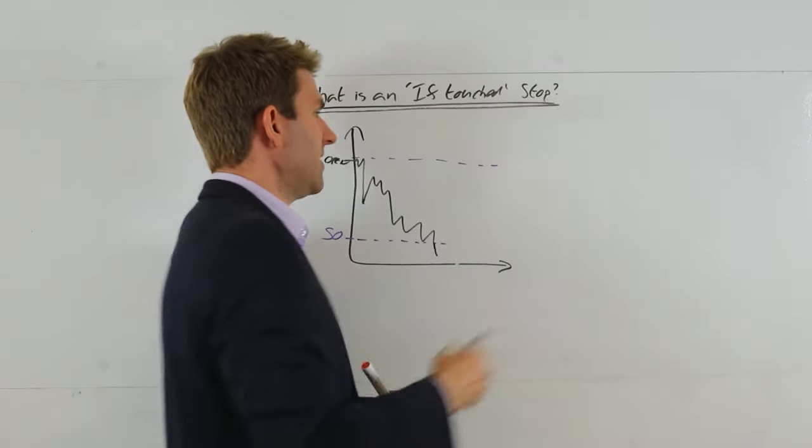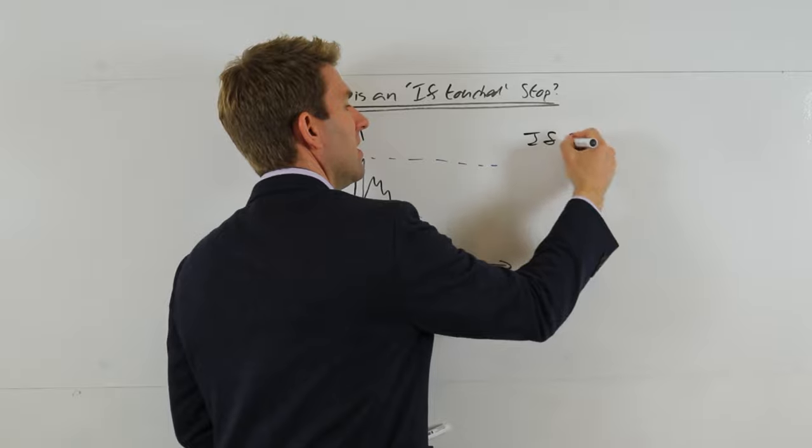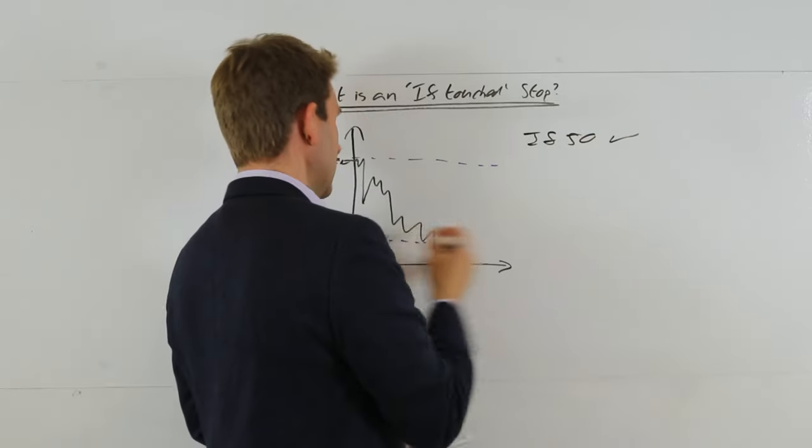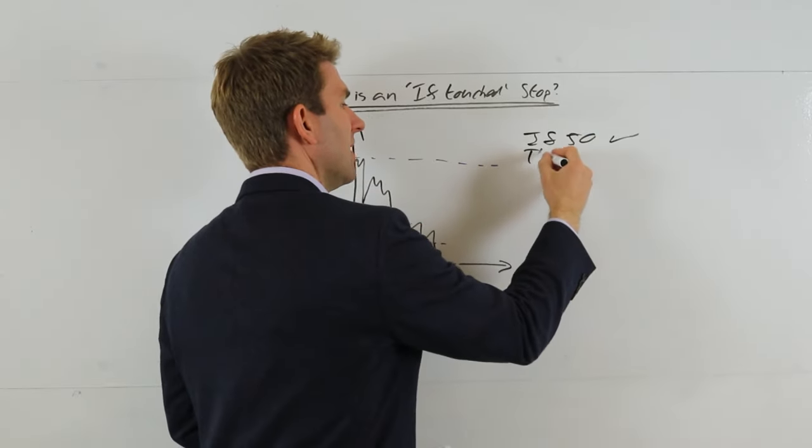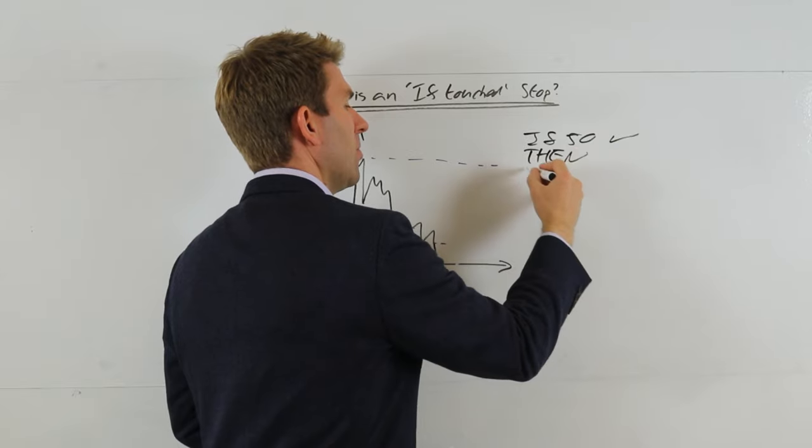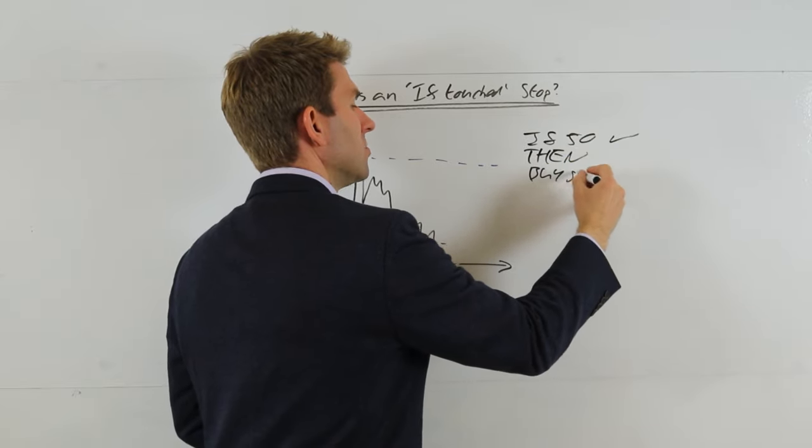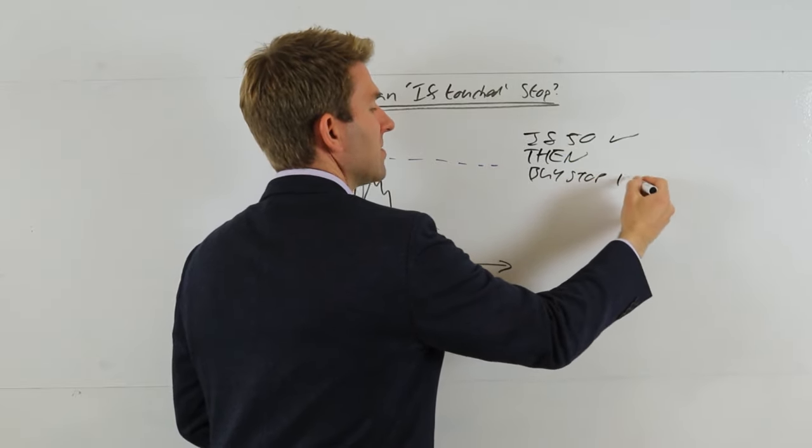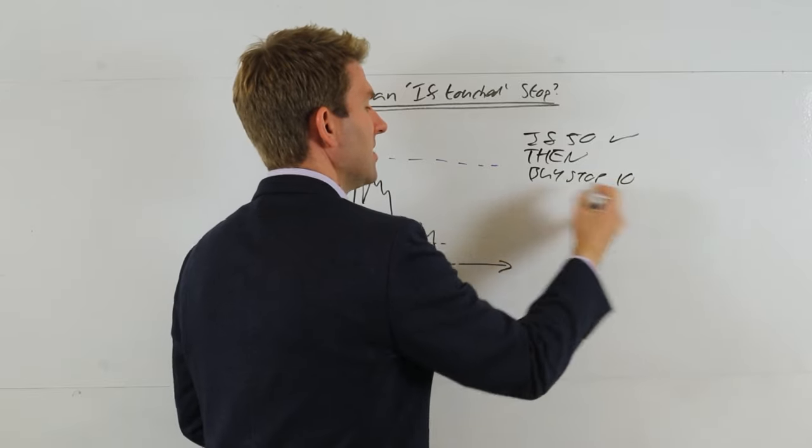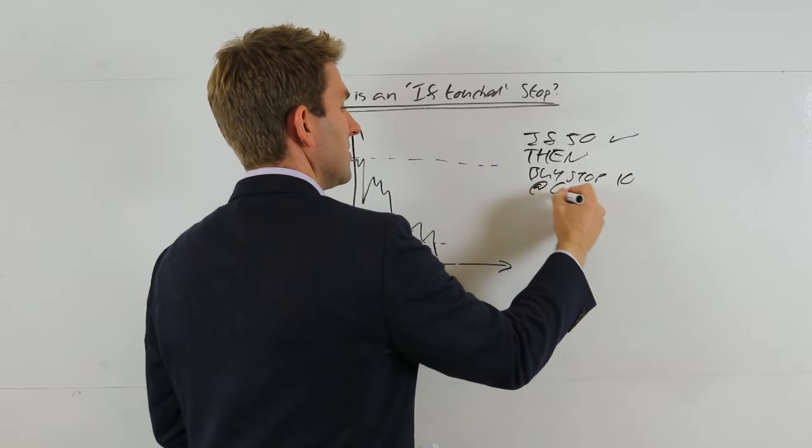So our order would be right, if 50 is touched, so if 50, I'm going to put a tick there, if 50 is touched, then this is the order that's going in. Then we have a buy stop for, let's keep it with our 10 pounds or 10 contracts, 10 at 60.